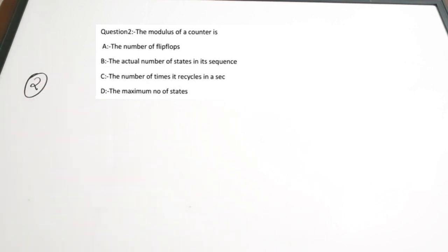The second question: the modulus of a counter is dash. Options: A) the number of flip-flops, B) the actual number of states in its sequence, C) the number of times it recycles in a second, D) the maximum number of states. The modulus of a counter is the actual number of states in its sequence. Correct answer is option B.